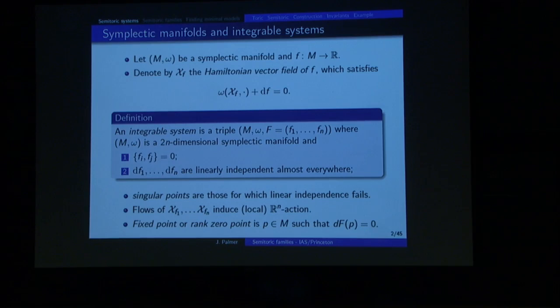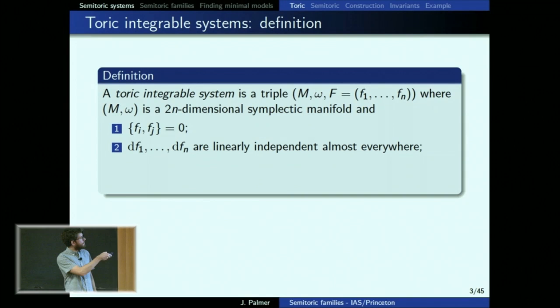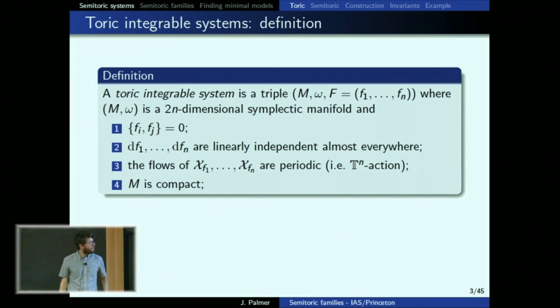We begin with fixed points of the RN action, also called rank zero points of the integrable system. Let's start with the toric case, which is the nice case we'd like to emulate where things all work very well. Here we have the definition of an integrable system, and the additional requirement in the toric case is that the flows of these Hamiltonian vector fields are all periodic of the same period, meaning it comes from a Hamiltonian T^N action.